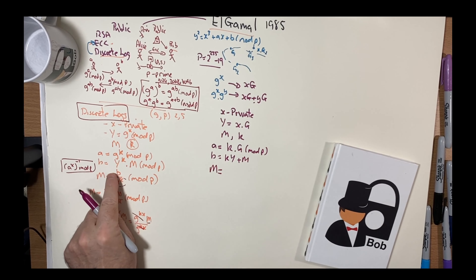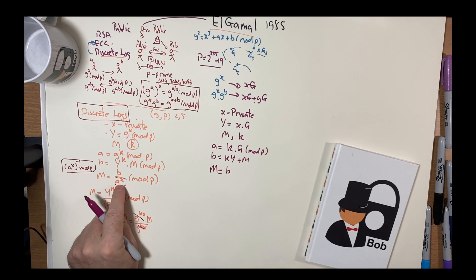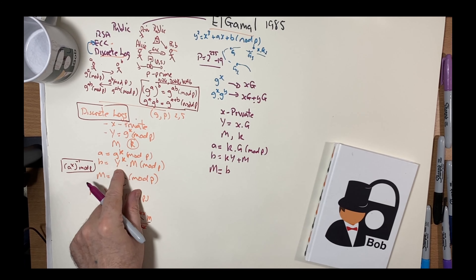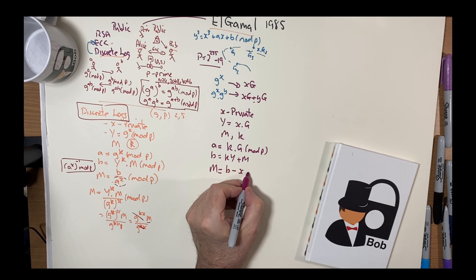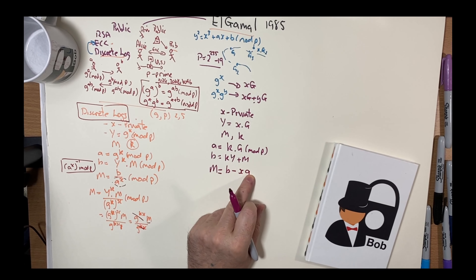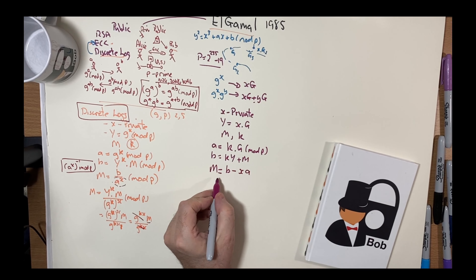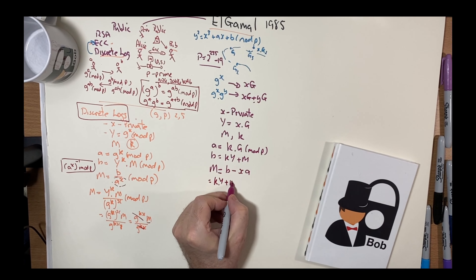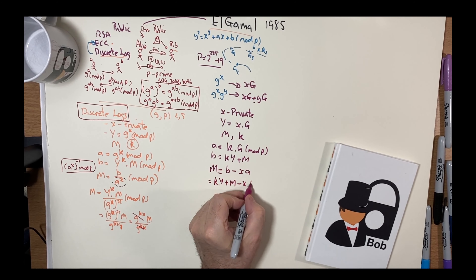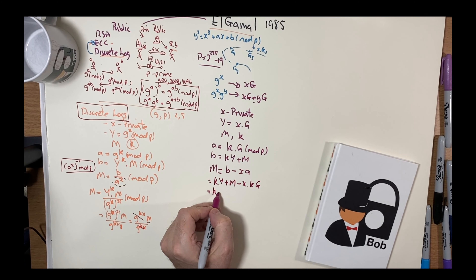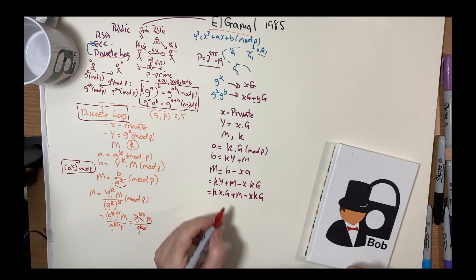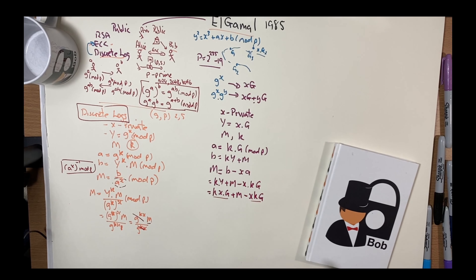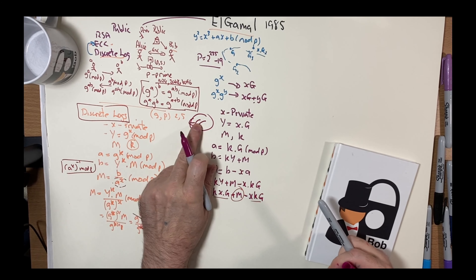When Alice receives the ciphertext, she has her private key. She takes B and subtracts X times A — because in elliptic curves, division becomes subtraction. So that's K times Y plus M minus X times K times G. Since Y equals X times G, the K times X times G terms cancel, and we end up with just the message M. We've successfully taken a discrete log problem and converted it into an elliptic curve problem.